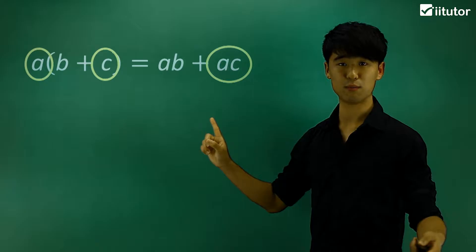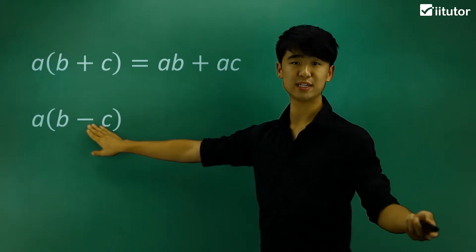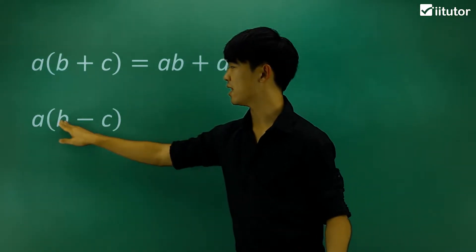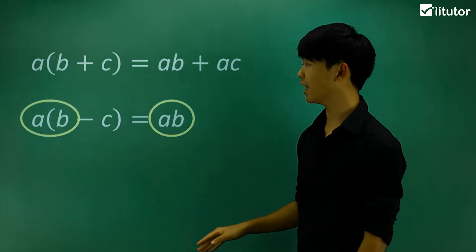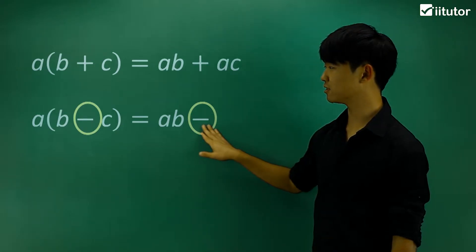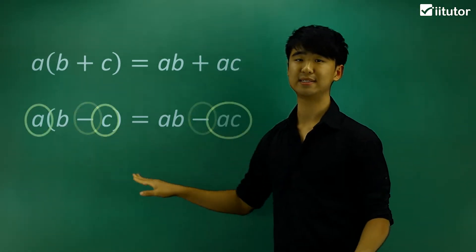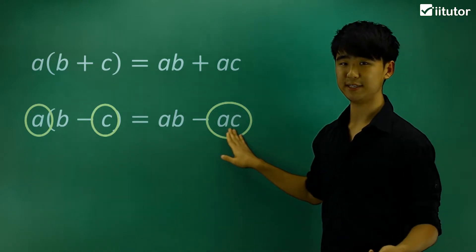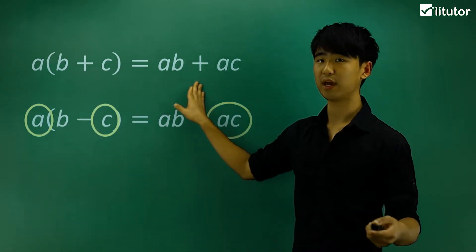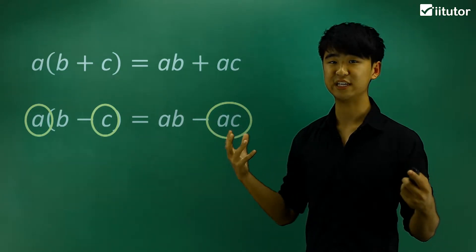Let's look at one more example. This is very similar but we have a negative sign, so what does that change? We multiply a and the first term, which gives ab. Now keep that negative sign, and a multiplied by c gives ac. So the expanded form is ab minus ac. It's very important that we maintain our signs, and this is the basic form of expanding expressions.